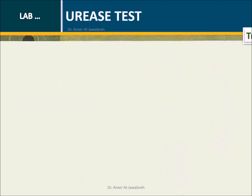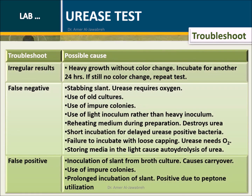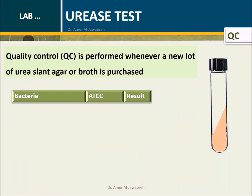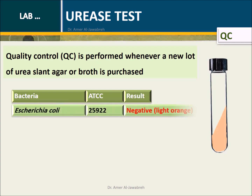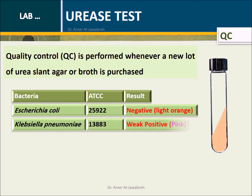Troubleshoots with possible causes. Quality control: QC is performed whenever a new lot of urea slant, agar, or broth is purchased. A list of ATCC bacteria and their expected results is provided for reference.